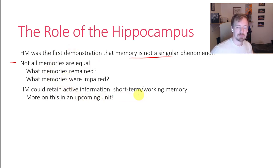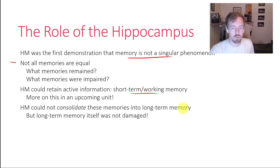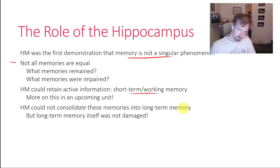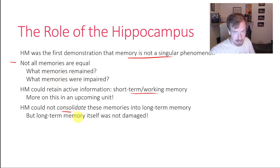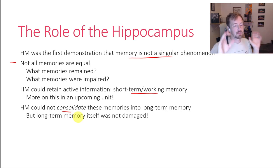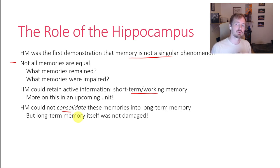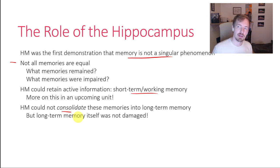HM still had short-term memory and working memory. Without his hippocampus, he was unable to consolidate memories — he could encode them but couldn't consolidate them, and because of that he wasn't able to retrieve explicit memories. But he could retrieve implicit memories using recognition tasks instead of recall tasks.